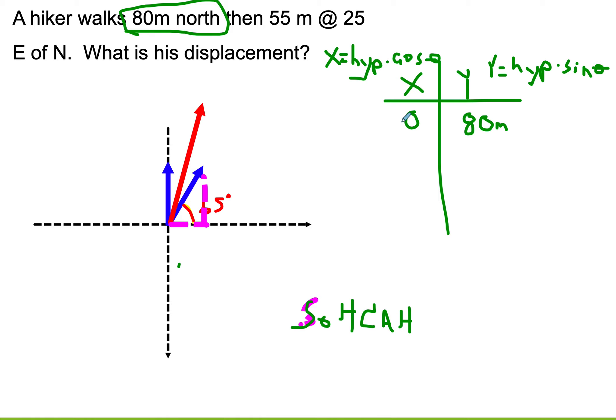So for this x, for the x piece of this vector, I'm going to say that that is 55 times the cosine of 65, because I'm always going to use the angle that touches the x-axis. And then for the y part, that'll be 55 times the sine of 65.